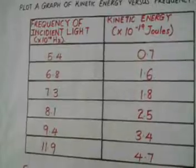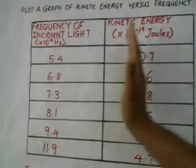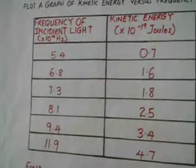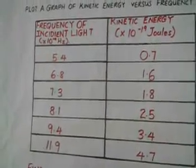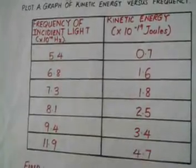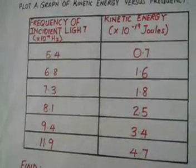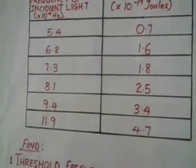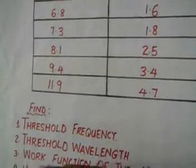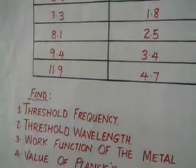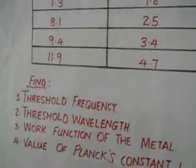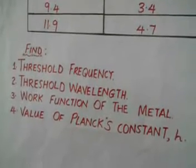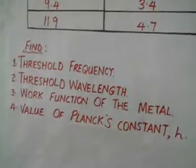We are going to plot a graph of kinetic energy against frequency, and we will use that graph to find: first, the threshold frequency; second, the threshold wavelength; third, the work function of the metal; and fourth, the value of Planck's constant.